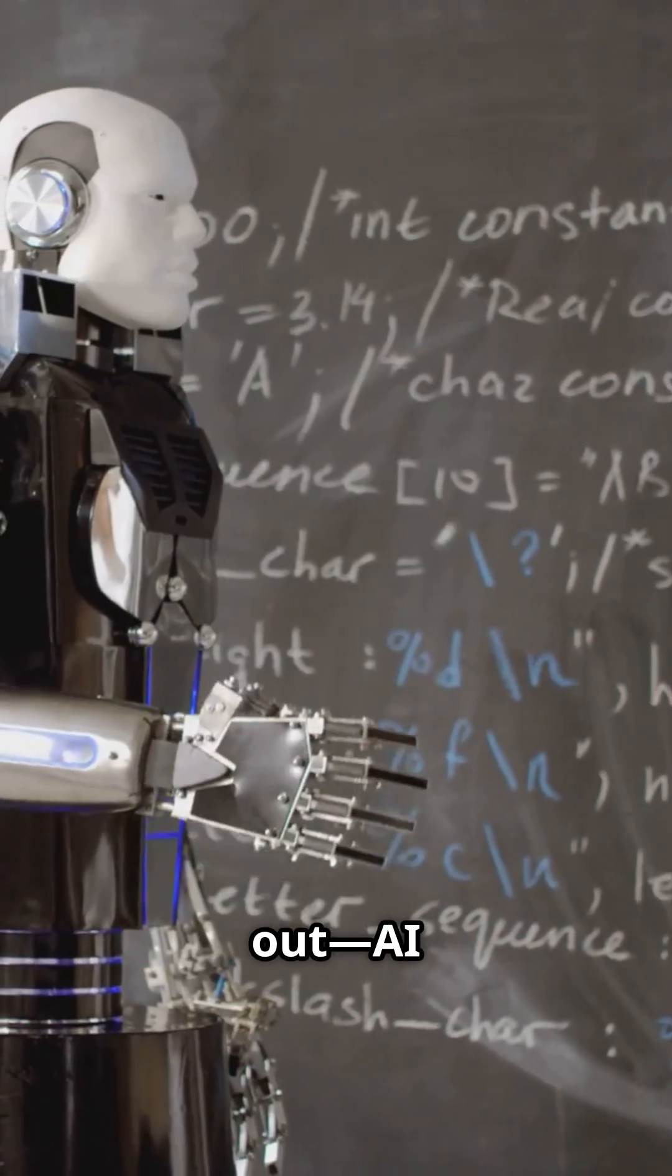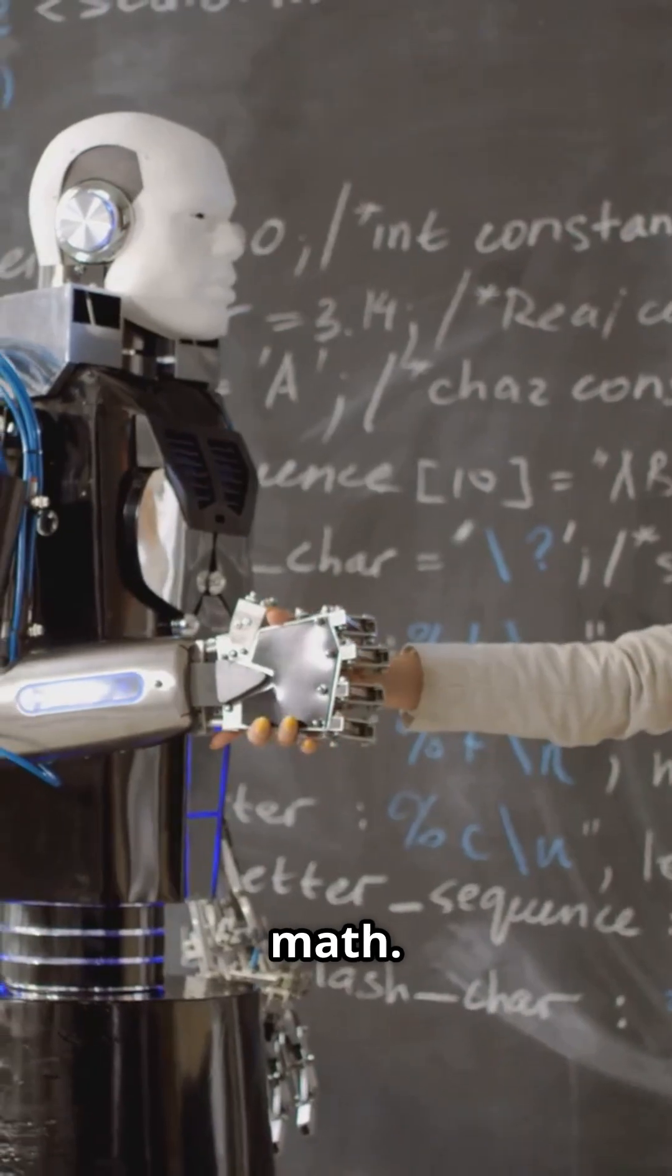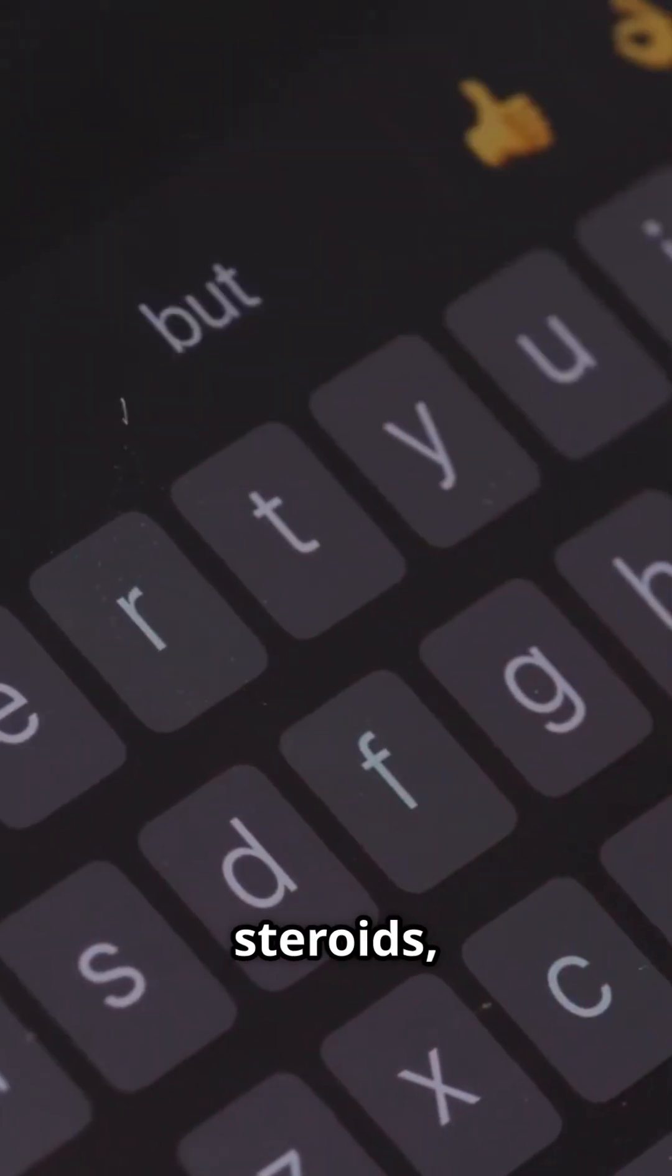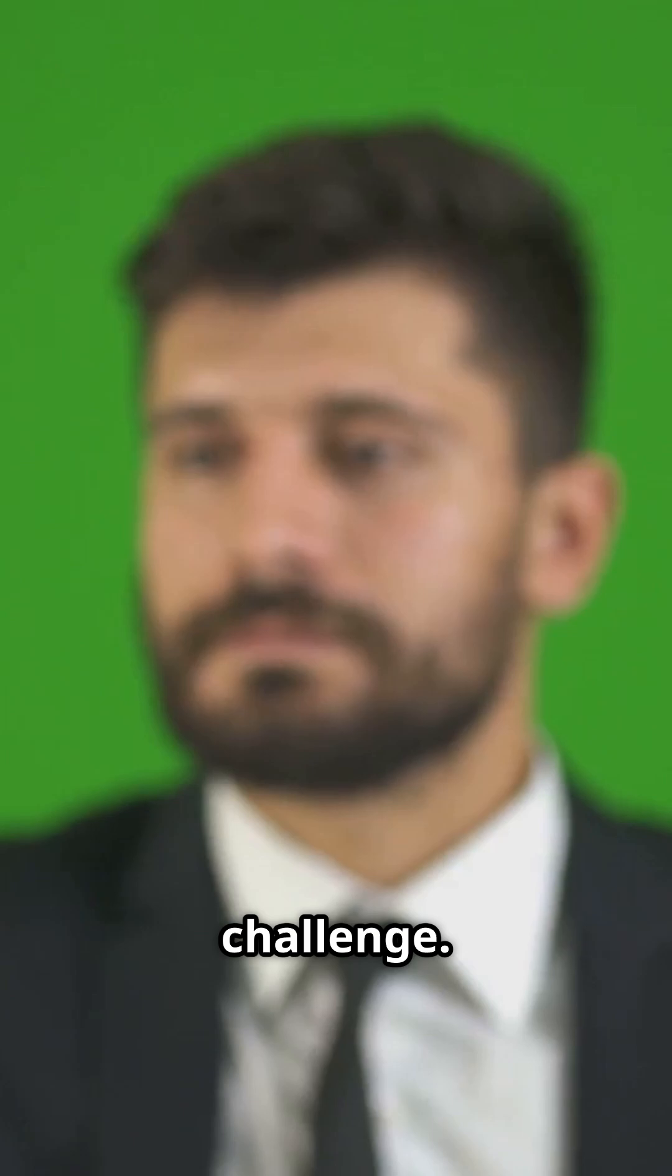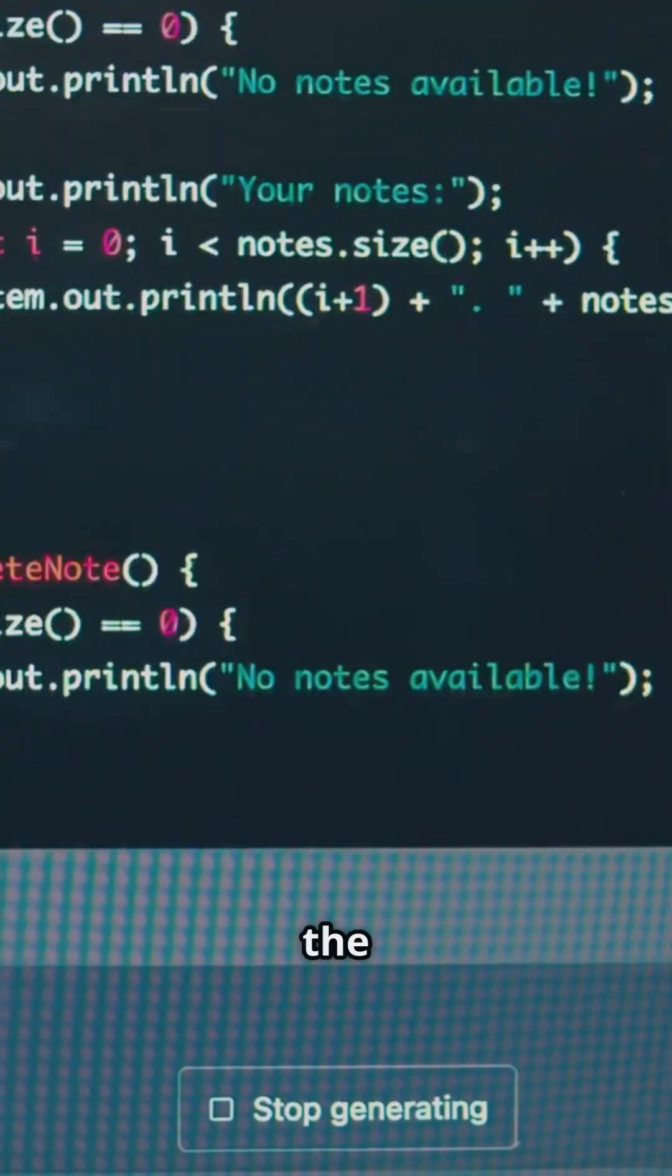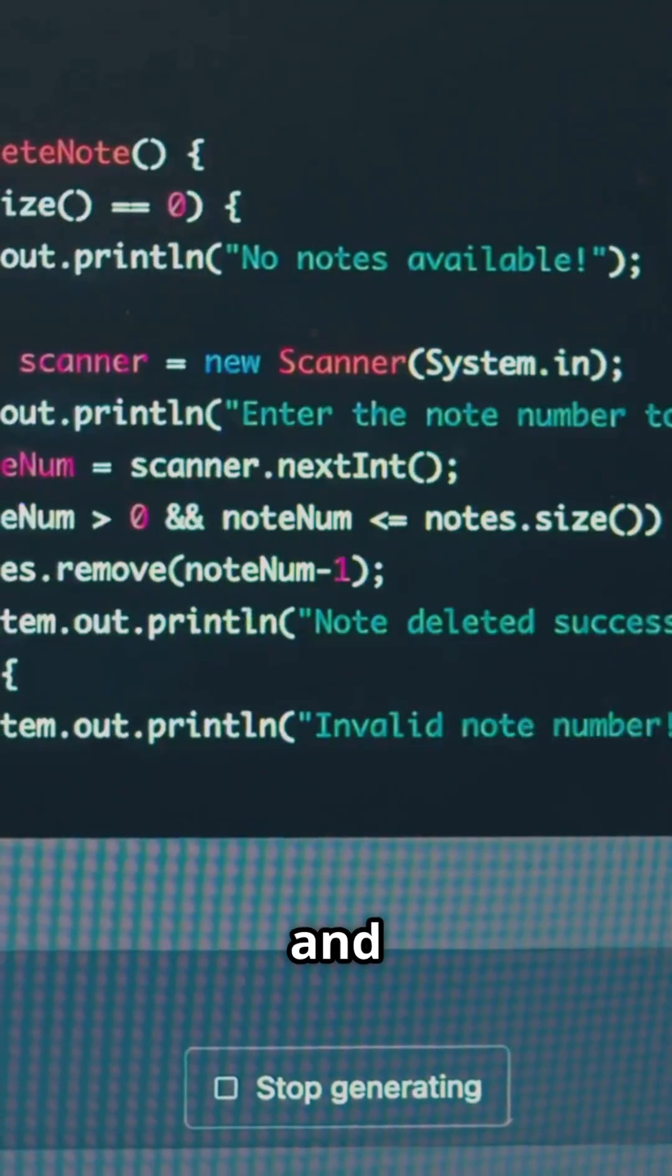AI doesn't truly understand math. It's basically autocorrect on steroids, just really, really good at faking it. So, here's your challenge. Drop your toughest math problem in the comments. I'll run it through AI and respond with the answer.